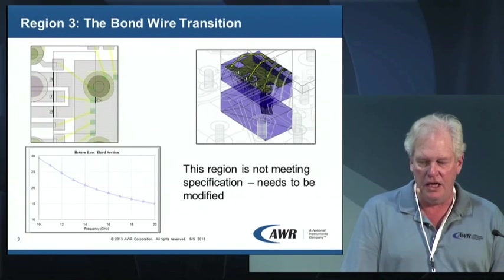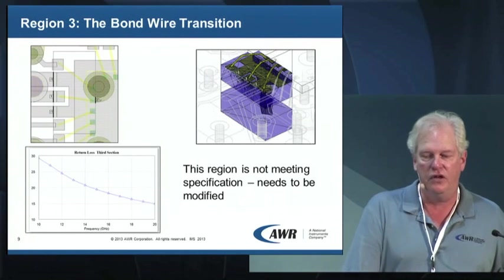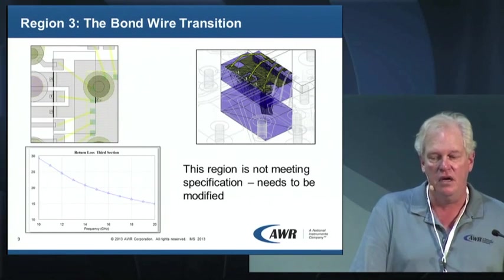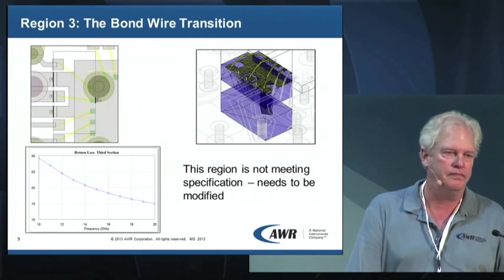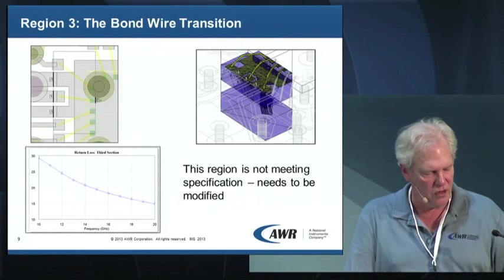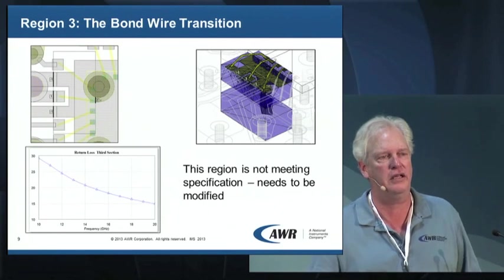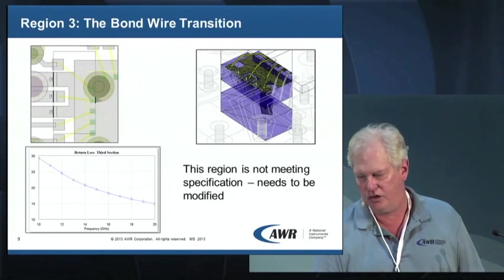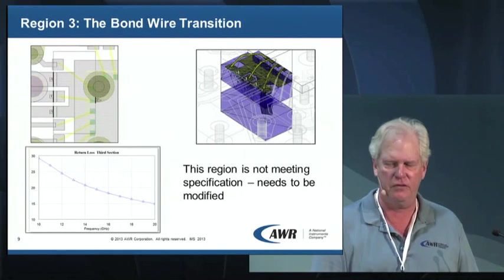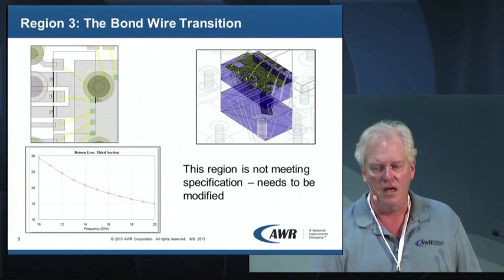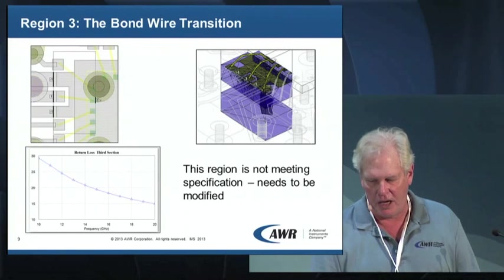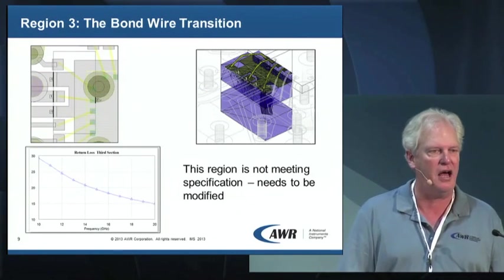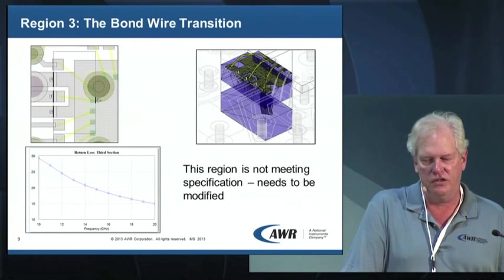The third region is the bond wire transition. On the left, there's that differential drive again — the ones and minus-ones — because that's how the current drives. The bond wire is included using a pre-configured p-cell; they just placed it down and it draws the bond wire automatically. Looking at the results at the bottom, it's not as bad as the BGA transition, but at the higher frequencies it's certainly less than 20 dB — not meeting spec.